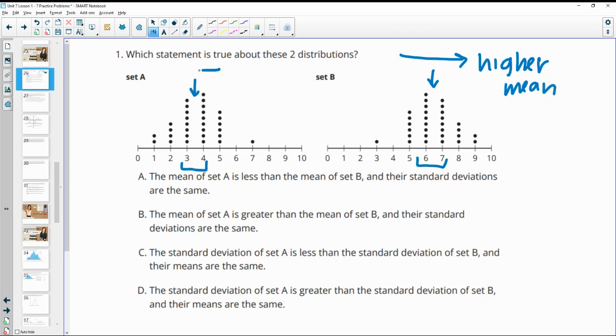And most of them here are to the left, so that's going to be a lower mean. And then the dots are pretty much the same kind of width away from each other in each of these sets. So I would say the standard deviation seems to be about the same.